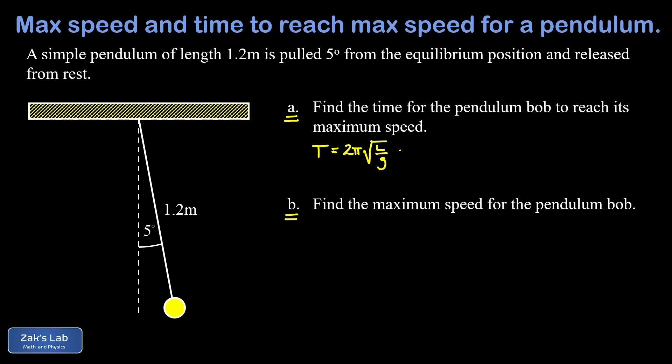Note that we weren't given the mass for the pendulum bob and we don't need it because the period of a simple pendulum is not mass dependent. So we plug in our length of 1.2 meters and we'll use 9.8 for our approximate value of g, and to three significant digits we get a period of about 2.20 seconds.